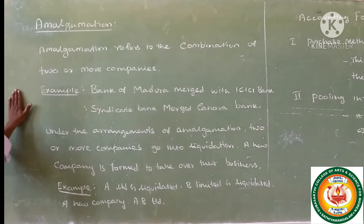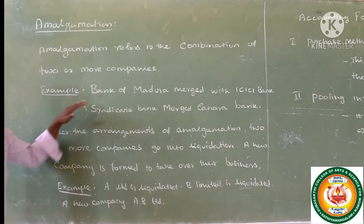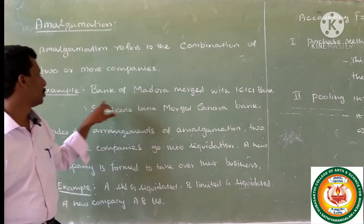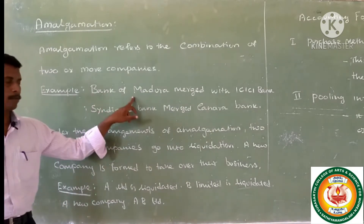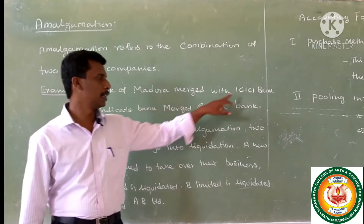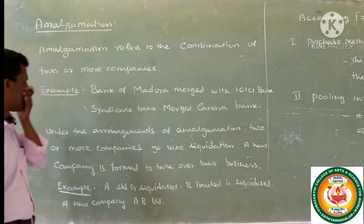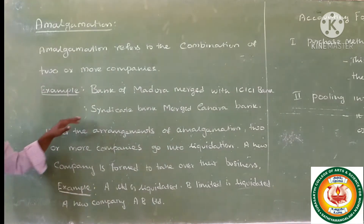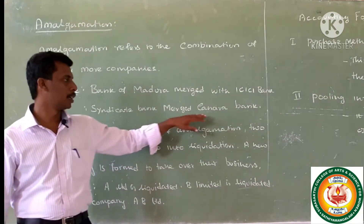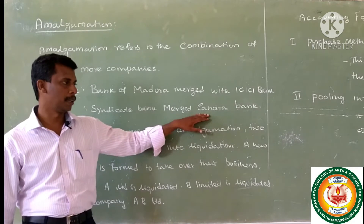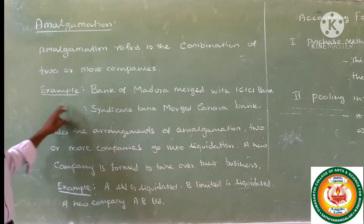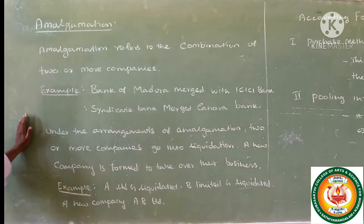For example: ICICI Bank — Bank of Madura merged into ICICI Bank. Another example: Syndicate Bank merged with Canara Bank, and after the merger, Syndicate Bank's identity ceased and it became part of Canara Bank.